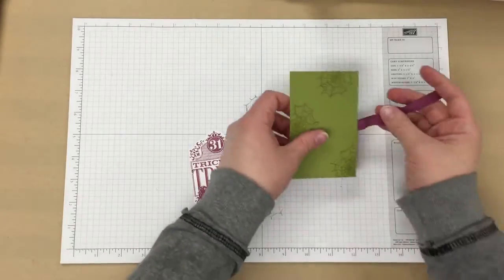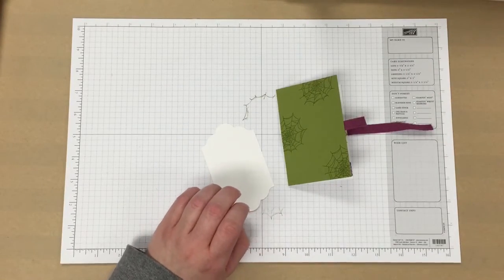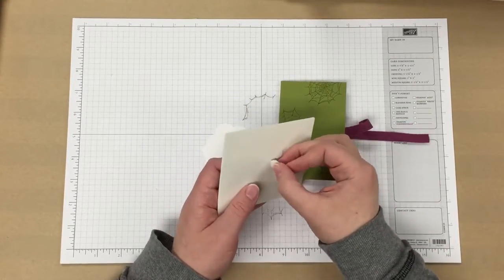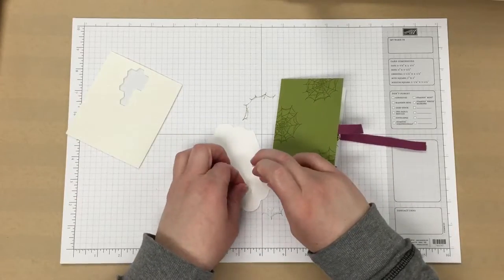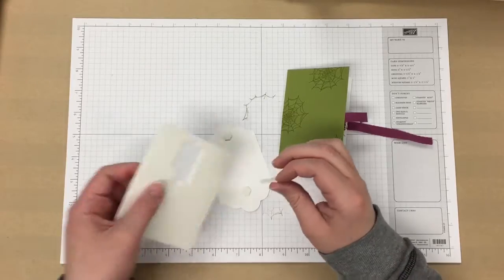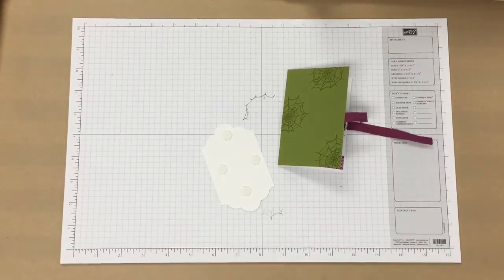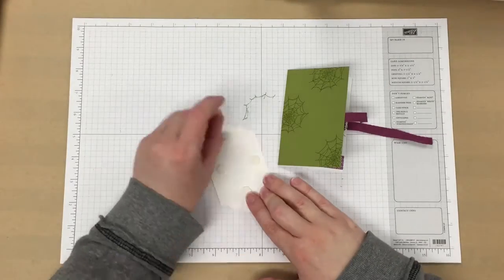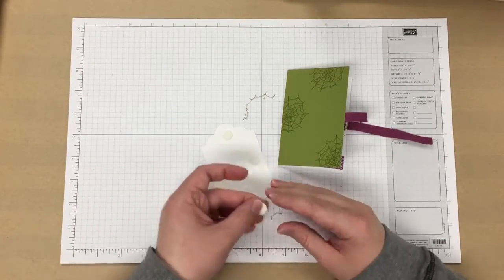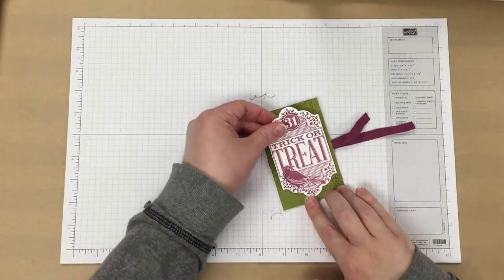Now we're just going to add some dimensionals to the back of that. Then remove the backing and add that to the middle of your green old olive cardstock piece.